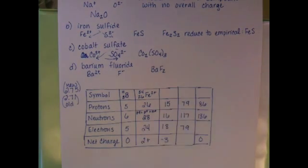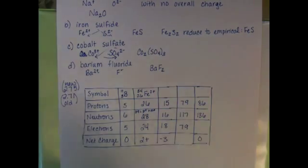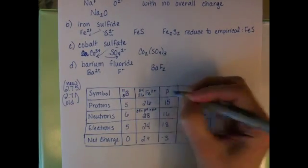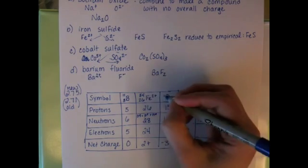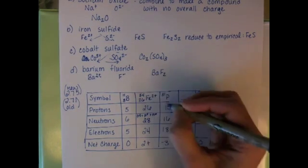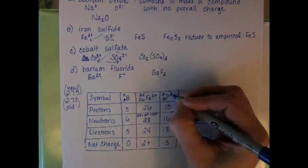The atom with 15 protons is phosphorus. Its mass number is the protons plus neutrons, 31, and it has a net charge of 3 minus.